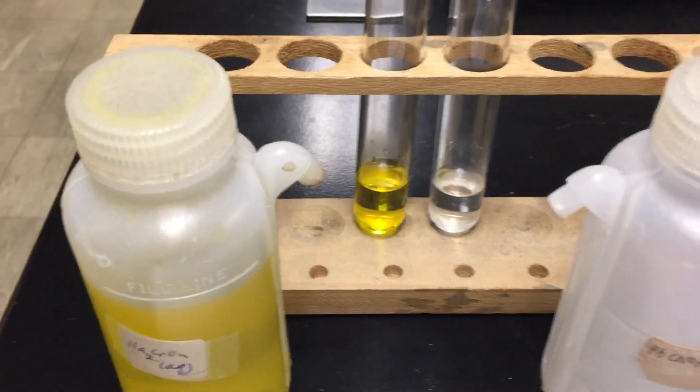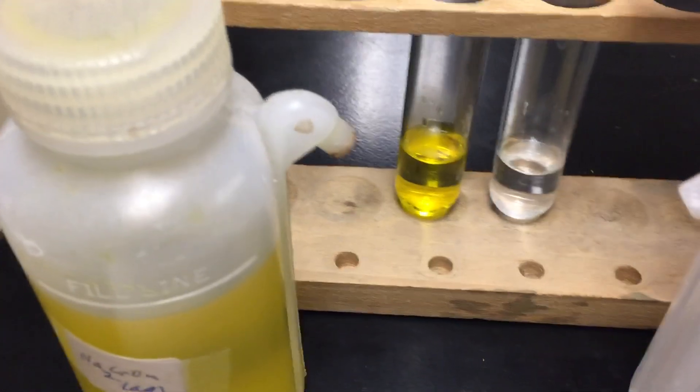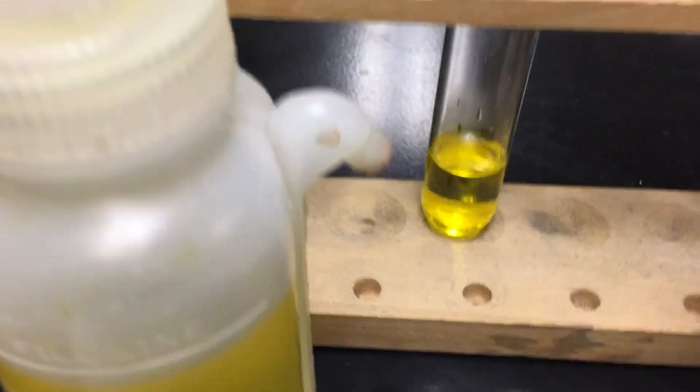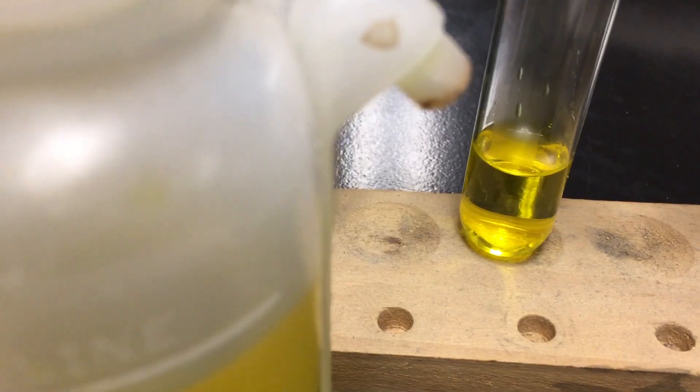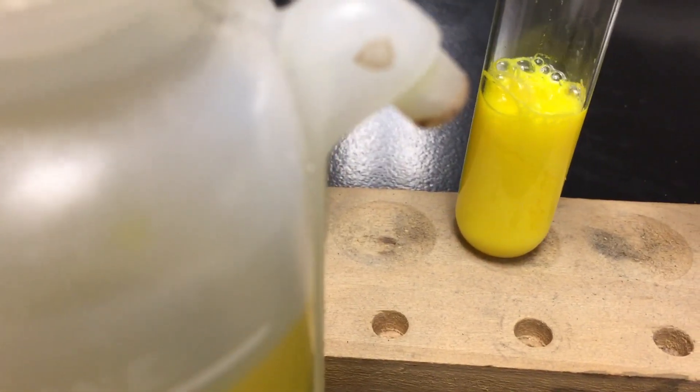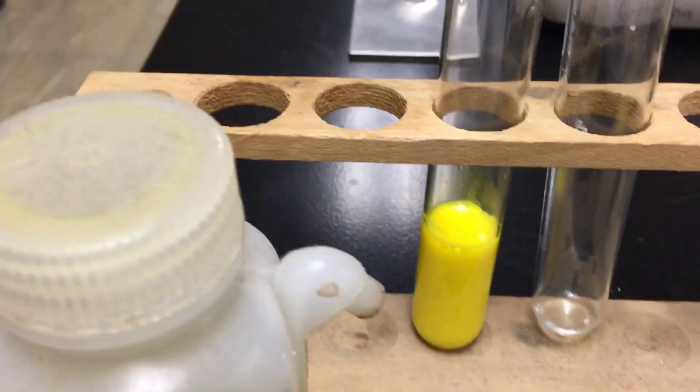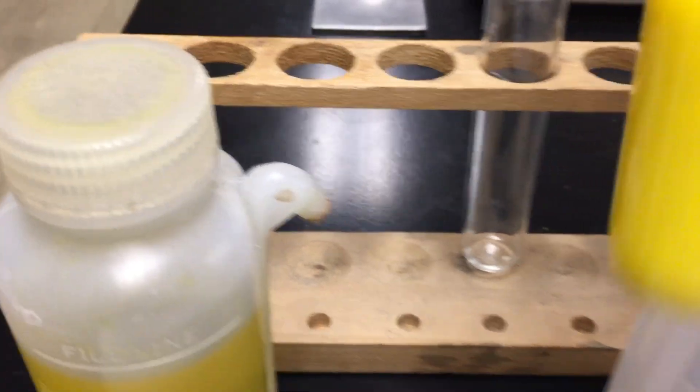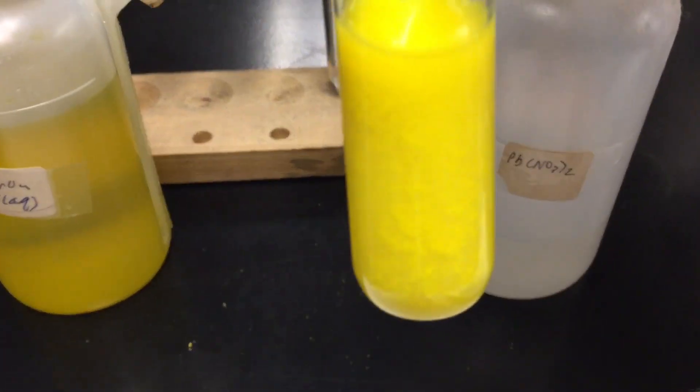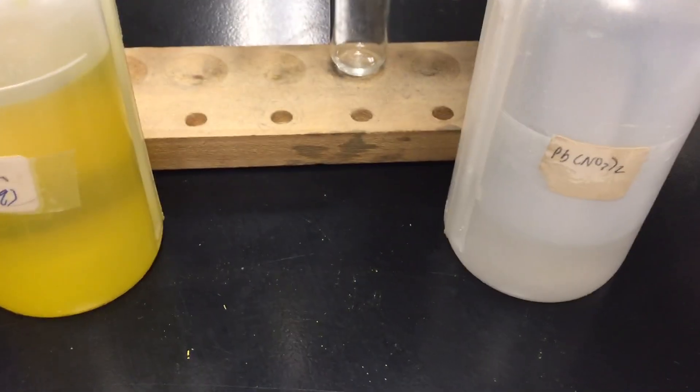So the type of reactants you're dealing with often determine the rate of the reaction. So let me add the lead 2 nitrate to the sodium chromate, and we'll see how quickly that reaction proceeds. And you can see that the yellow precipitate forms instantaneously. So nature of reactants is a factor that affects the rate of a reaction. You can see the yellow precipitate there, and that will eventually settle out.